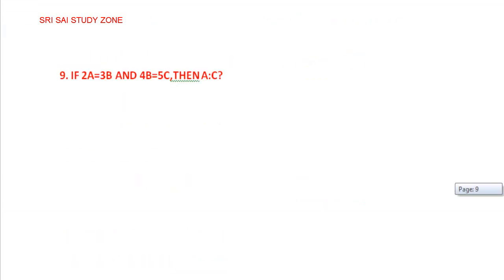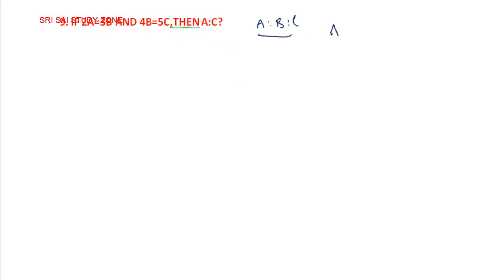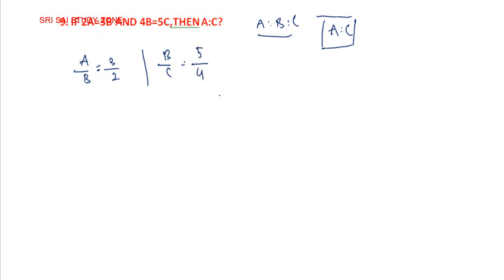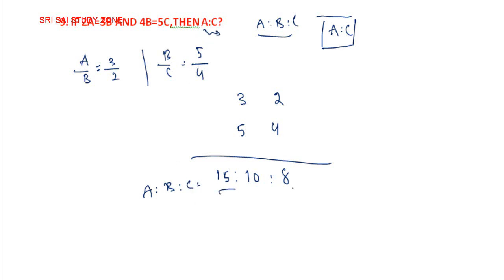Next question: if 2a is equal to 3b and 4b is equal to 5c, then a is to c. Here only a and c are needed. a by b is equal to 3 by 2, b by c is equal to 5 by 4. Multiply: 3 times 5 is 15, 2 times 4 is 8. So a is to c is equal to 15 is to 8.